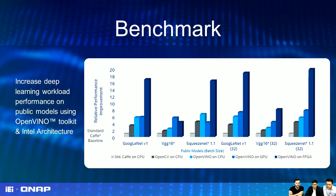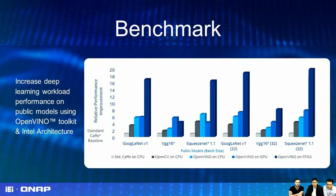The benchmark covers different topologies — as Brian mentioned, VGG, GoogLeNet, ResNet, and others. These are all shown in the performance comparison. This is why OpenVINO and FPGA acceleration together deliver such strong performance gains.